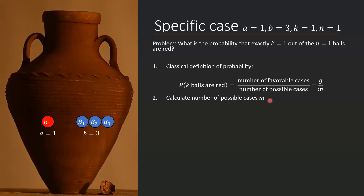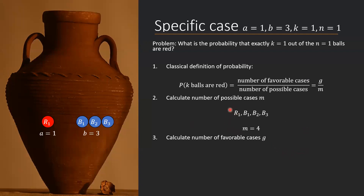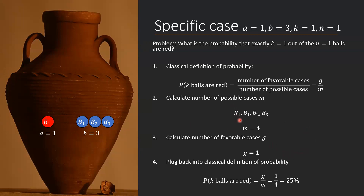We start by calculating the number of possible cases m. We can enumerate every possible case: we took ball R1, or B1, or B2, or B3 — so total we have four possible cases, m equals 4. How many are favorable? Only the one case where we got the red ball, so g equals 1. Plugging back into the classical definition of probability, we get 1 over 4, or 25%, as expected.